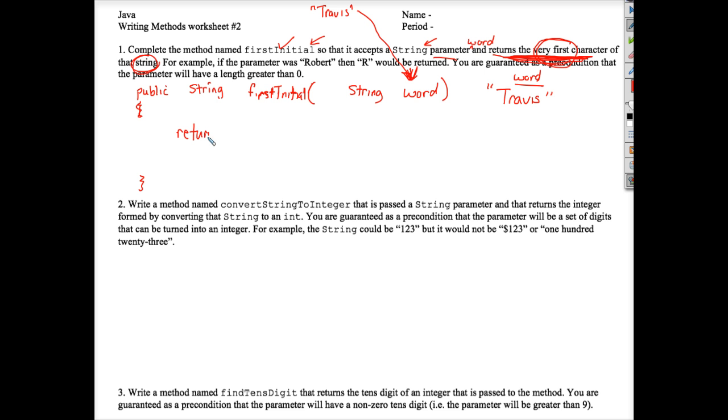You could do it all in one statement, return word—and this is where you have to just know what methods are available to you, a method that would pull out a first character. You should know that there's a substring method in the string API that you're allowed to use on the AP exam. Do not capitalize the S. Methods are always lowercase first letters. Substring is overloaded. You will need the two parameter version in this case. You'll need to put a 0 comma 1. It's that easy. And don't forget your semicolon.